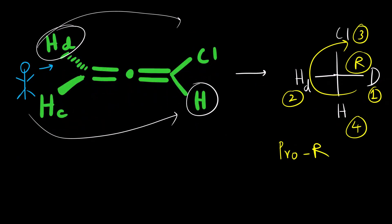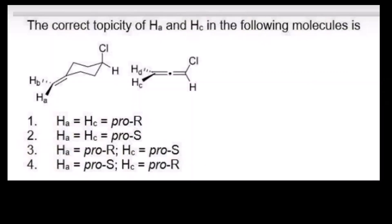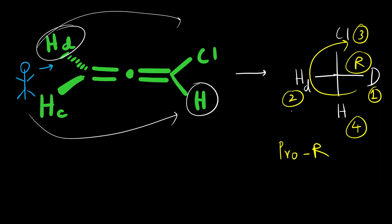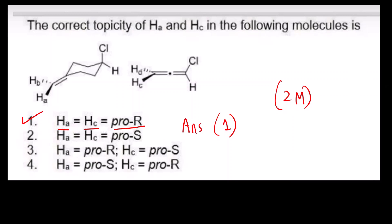For both centers, the answer is pro-R. So the correct answer for this question is option 1: HA = HC, both are pro-R. This question was worth two marks. For more detailed understanding, you can watch the linked video. Thank you.